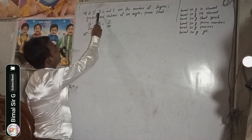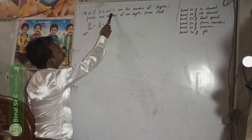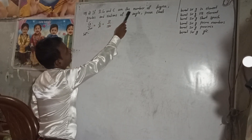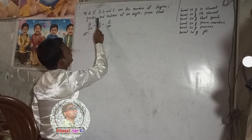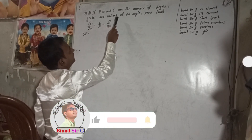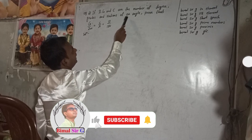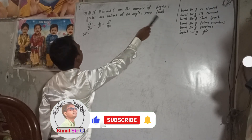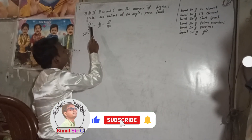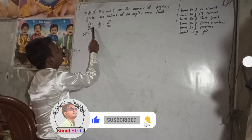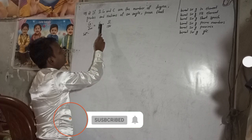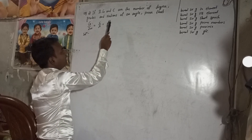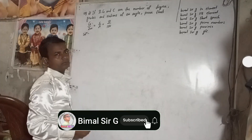If D, G and C are the number of degrees, grades and radians of an angle, prove that G by 200 is equal to C by Pi is equal to D by 180.